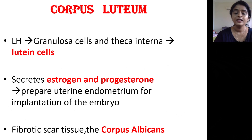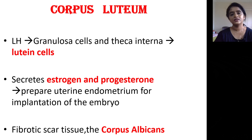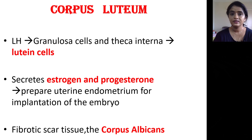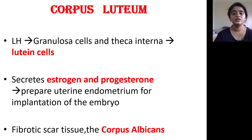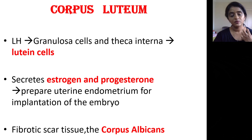The luteinizing hormone results in the secretion of lutein cells by its action on granulosa cells and the theca interna, which are layers of the Graafian follicle. Once the Graafian follicle liberates the secondary oocyte at ovulation, the remaining part of the Graafian follicle in the ovary gets converted into corpus luteum by the action of LH. The growing follicles secrete estrogen, and the corpus luteum additionally secretes progesterone, which is needed to make the endometrium ready for implantation of the embryo.